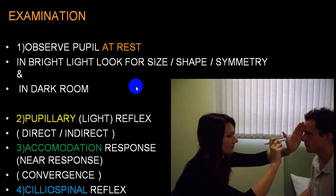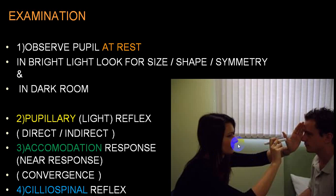When the person is looking at a distant object in daytime bright light, both pupils should be pinpoint. Look for both-side pupil size, shape, and symmetry. Second, put off the light (make the room dark) and observe the size, shape, and symmetry without throwing any light. While doing the pupillary reflex, first explain the procedure to the person.